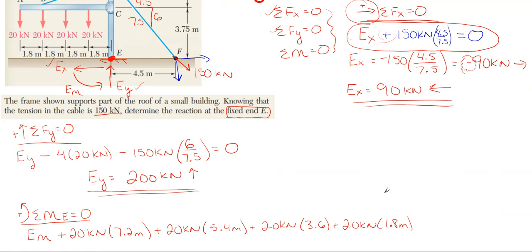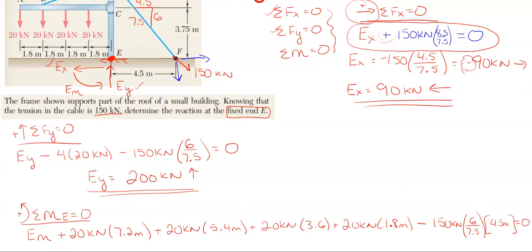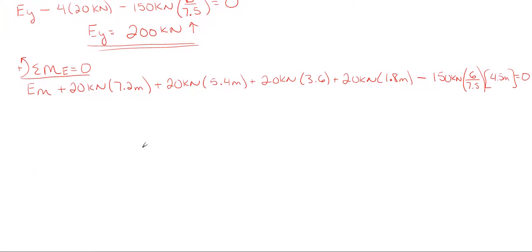For the 150 kilonewton cable placed at point F: the horizontal component passes directly through E, so its perpendicular distance is zero and it drops out of the moment equation. The vertical component does have a perpendicular distance of 4.5 meters to E, and it rotates clockwise about E, so it's negative: minus 150 times 6 over 7.5 times 4.5.